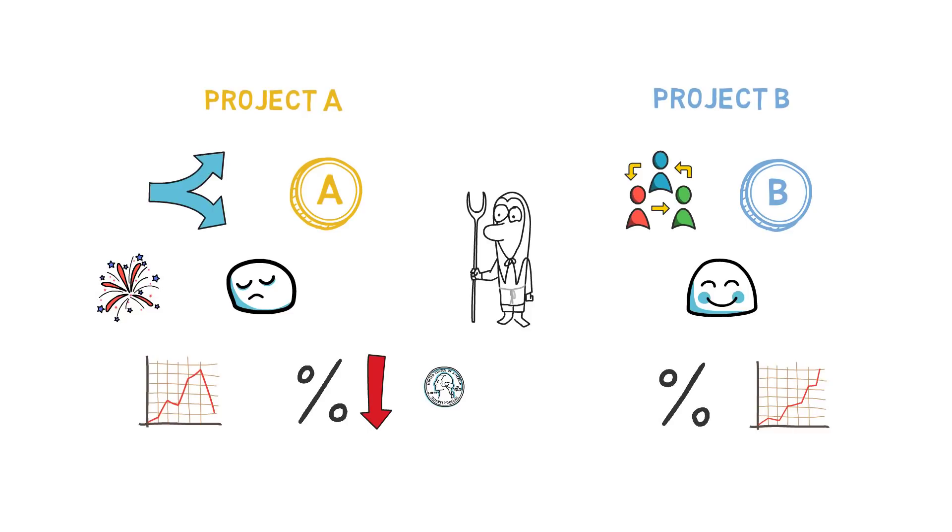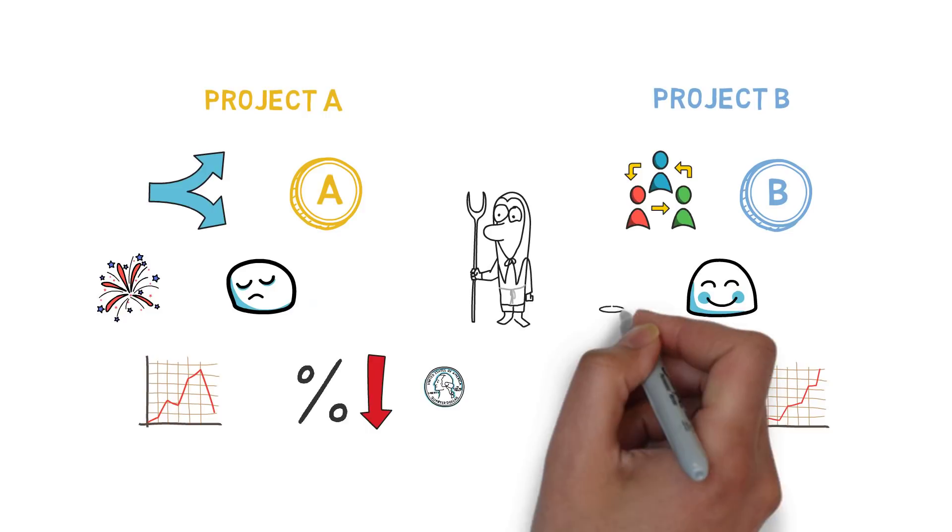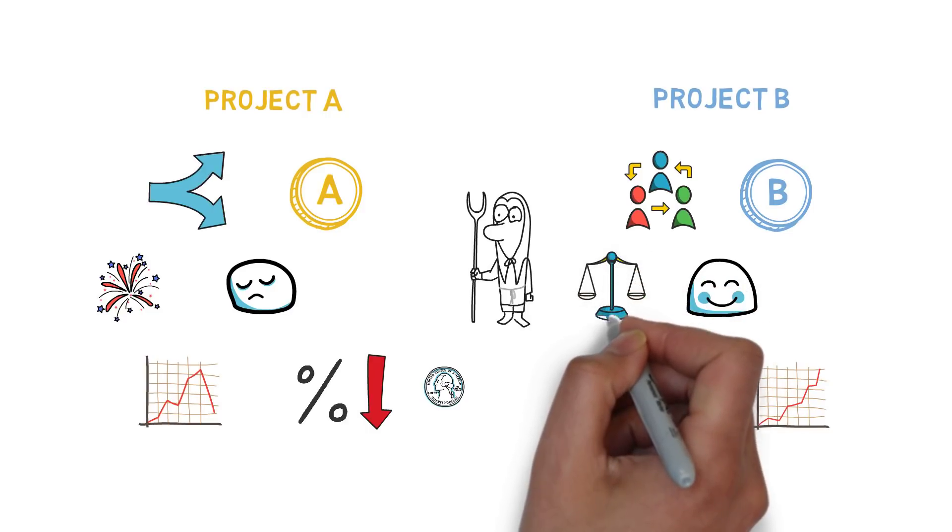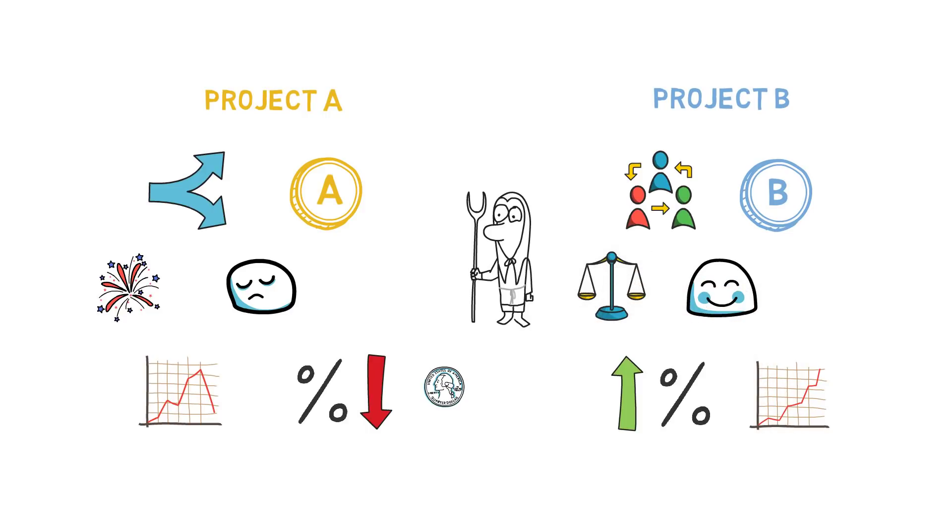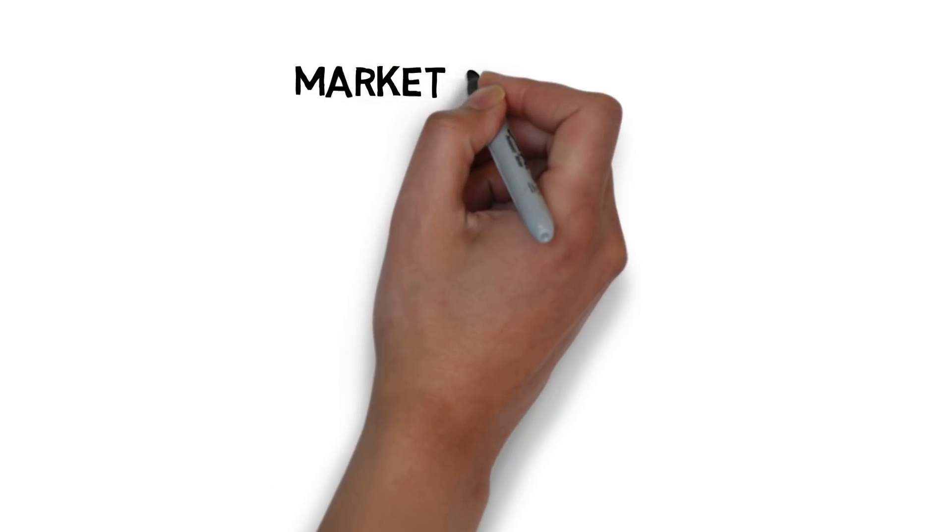In this case, high demand from investors is met with high supply caused by yield farmers selling their Token B. On top of the viability of a project, a general market sentiment also plays a huge role.